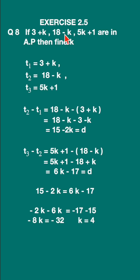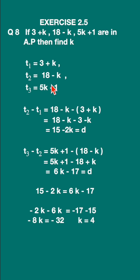This is the first term, second term, and third term. Let us write: t1 = 3+k, t2 = 18-k, t3 = 5k+1. They are telling us that they are in arithmetic progression, and we have to find the value of k.